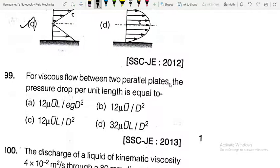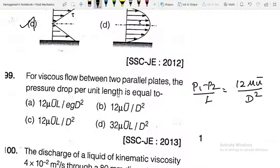For flow between two parallel plates, the pressure drop per unit length (P1−P2)/L uses the formula 12μU_bar divided by d². For a circular pipe, the corresponding formula is 32μU_bar divided by D². These formulas were covered in the last video — refer to that for details.